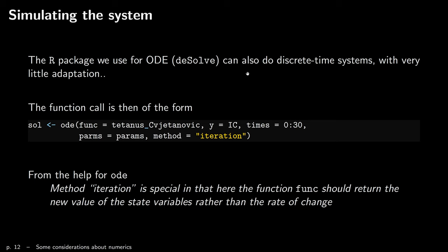Let me show you how you simulate that system. The package I introduced briefly in the first week — the solve package — you can use it for discrete time systems. It's very simple: you change the call to the function by adding method equals 'iteration'. When you do that, this signifies to the ODE solver that it should be solving in discrete time. But the rest is exactly the same: I need to say what function I'm using, my initial conditions, what times I'm integrating for, and what my parameters are.